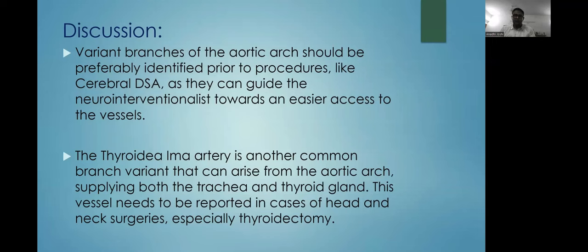The thyroidea ima artery is another common branch variant that can arise from the aortic arch, supplying both the trachea and the thyroid gland. This finding needs to be reported in cases of head and neck surgeries, especially thyroidectomy.